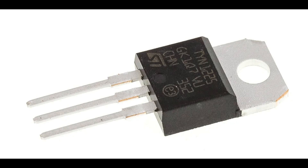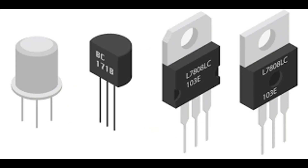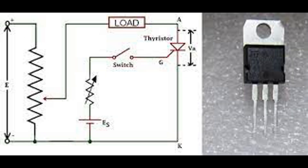Thyristors are widely used in various applications due to their ability to handle high power and provide precise control over electrical circuits. Power control and conversion: AC to DC rectification — thyristors are used in controlled rectifiers to convert AC power to regulated DC power, allowing for phase control and precise control over output voltage. DC to AC inversion — in inverter circuits, thyristors convert DC to AC, essential in applications like uninterruptible power supplies (UPS) and renewable energy systems such as solar inverters.